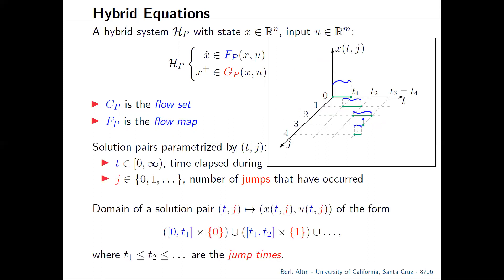Of course, you cannot pick an arbitrary t, j and ask what x of t, j is. Every solution comes with its own domain, but it takes the general structure of a disjoint union, where t_j's are the jump times and note the non-strict inequality, so we do allow consecutive jumps. And this is a fairly general framework encapsulating many existing models like hybrid automata or switched systems.